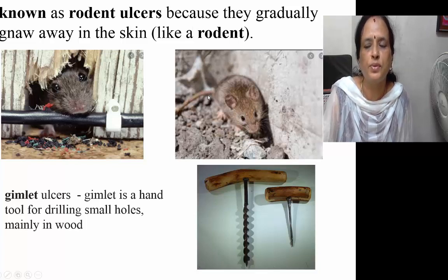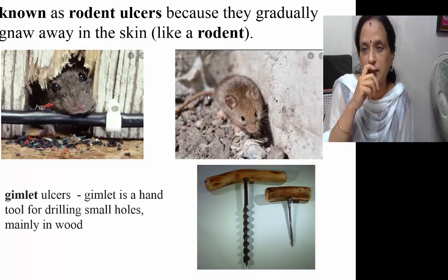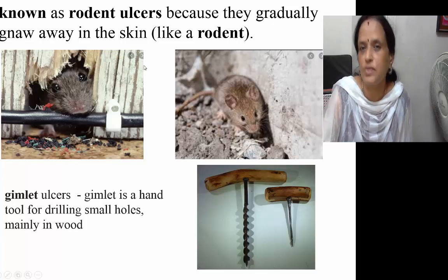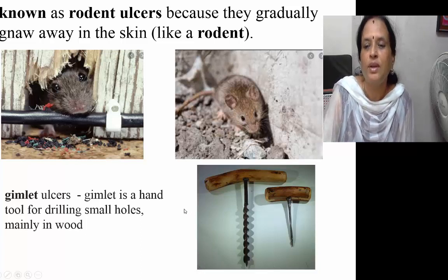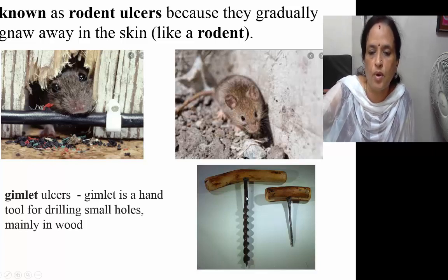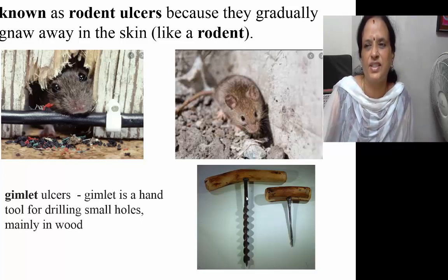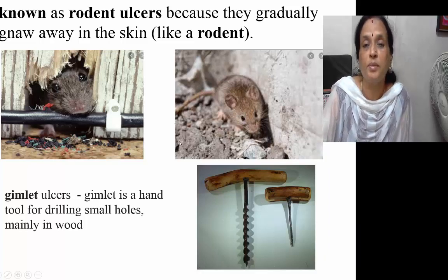I have taken two pictures to help you remember. A picture is worth a thousand words. Gradually, they gnaw away the skin — that is what a rodent does. Sometimes it is also referred to as a gimlet. A gimlet is the instrument a carpenter uses to drill small holes in wood. This tumor also drills and infiltrates deeper into the site. That is why it is also compared to a gimlet.